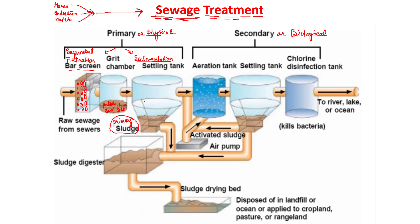The water remaining after sedimentation is known as primary effluent or supernatant. The sedimented part is known as primary sludge, which goes for composting or landfills. The primary effluent will now further go for biological treatment.